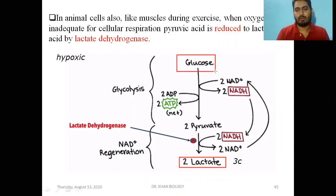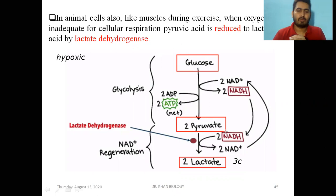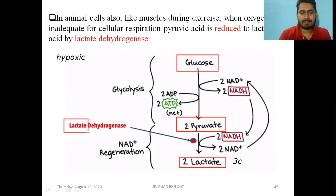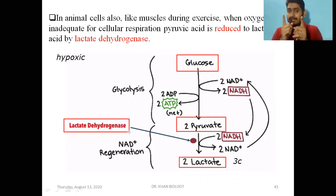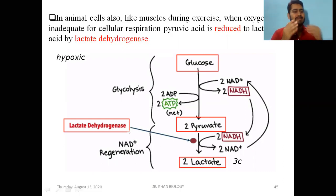Again, this is a two-step process. Glucose breaks down in the absence of oxygen by glycolysis into pyruvate — two molecules of pyruvic acid. Then there is an enzyme called lactate dehydrogenase which converts pyruvate to lactic acid. Note that in alcohol fermentation it was alcohol dehydrogenase, and here it is lactate dehydrogenase.